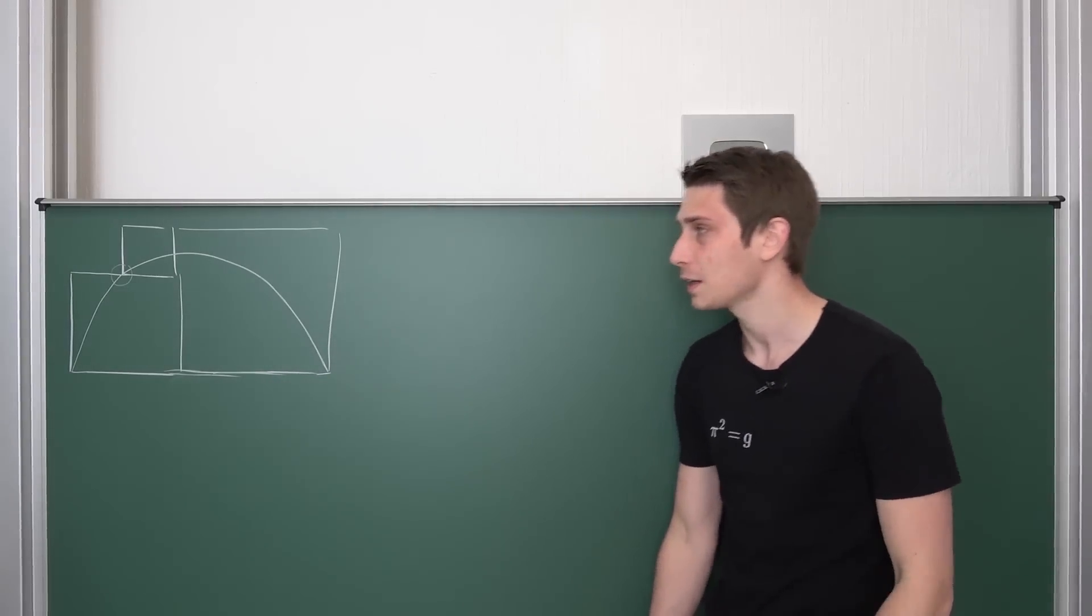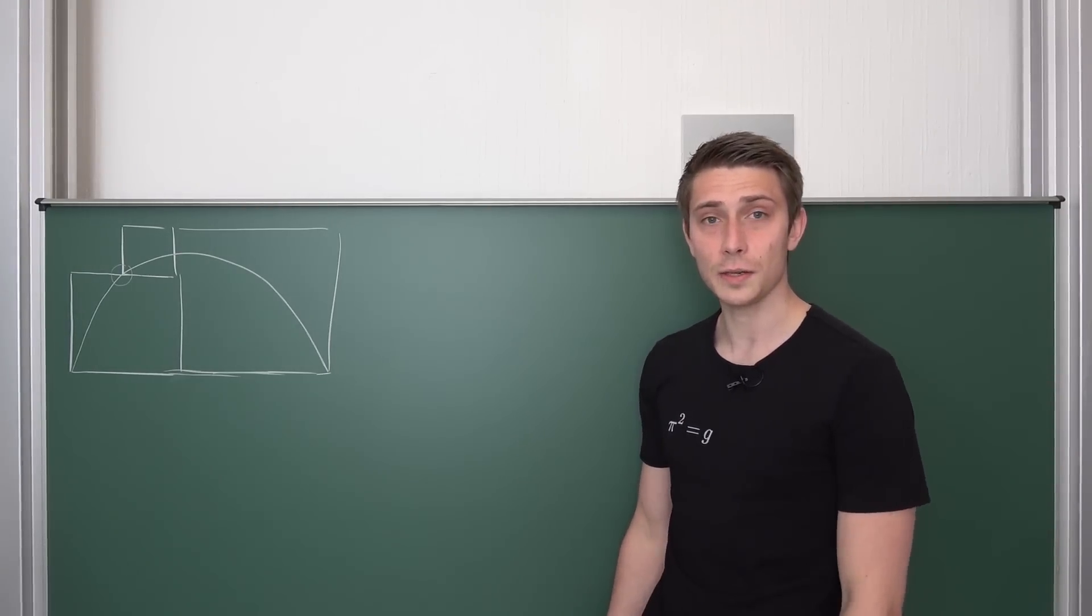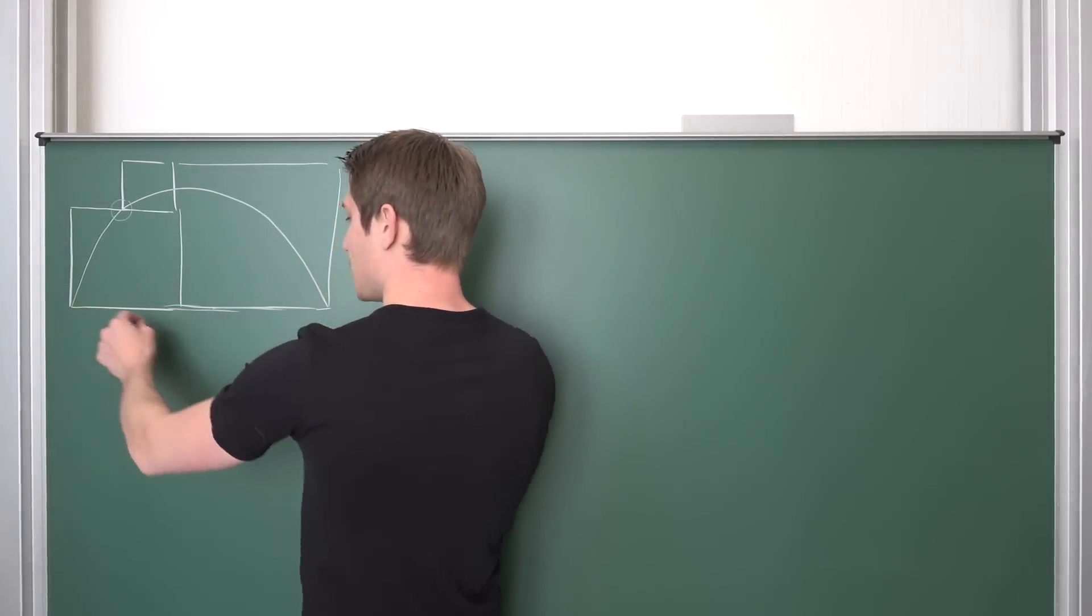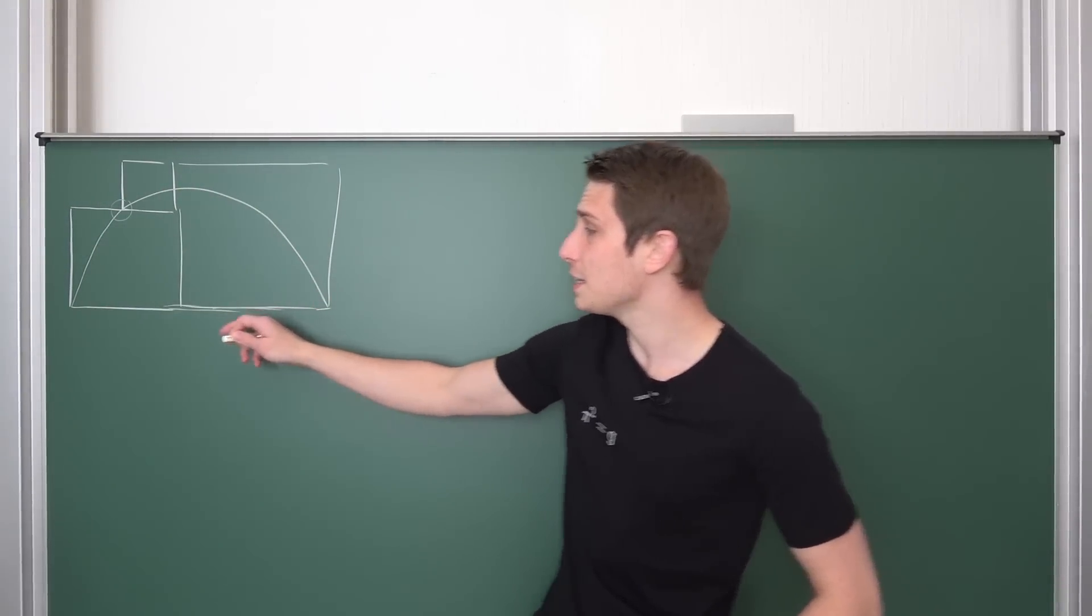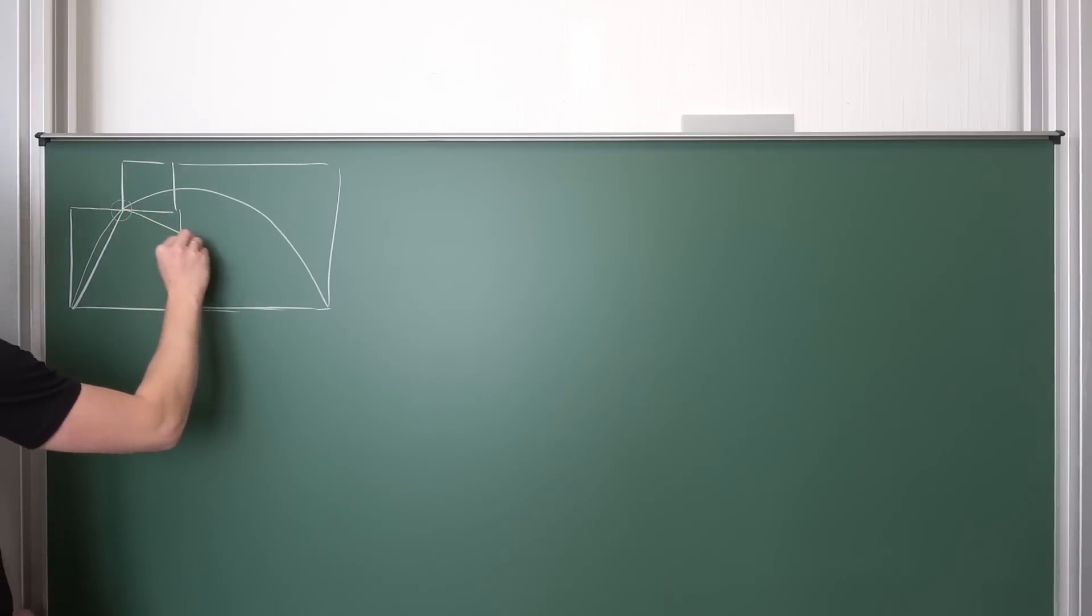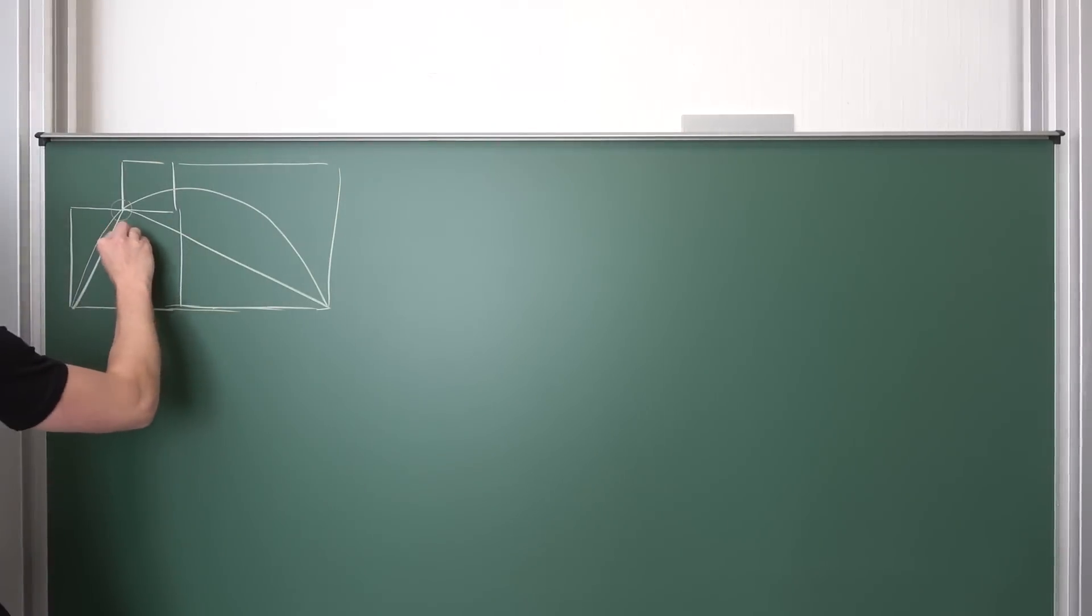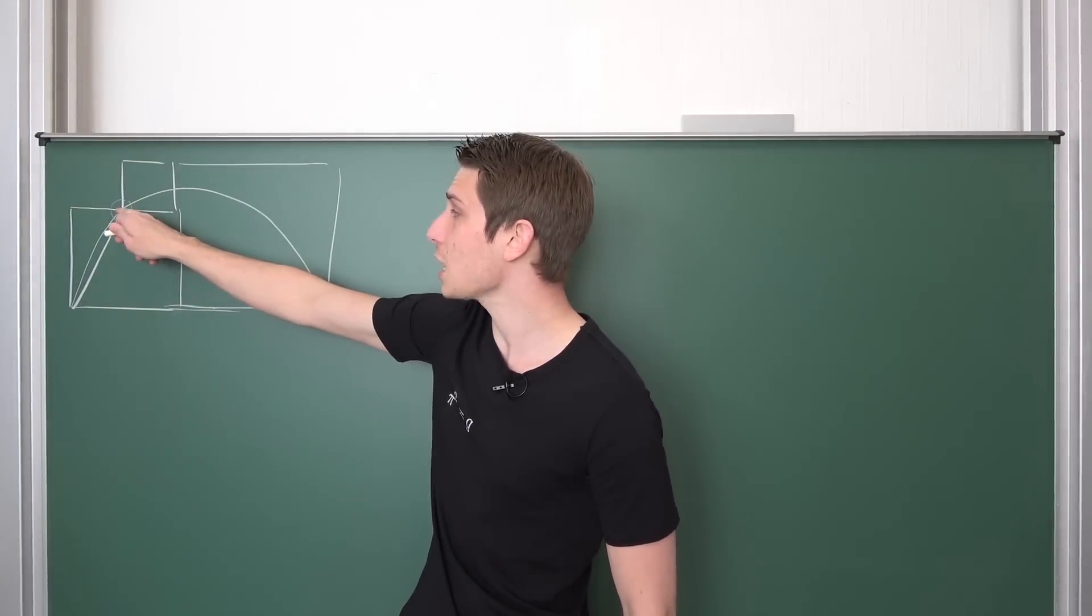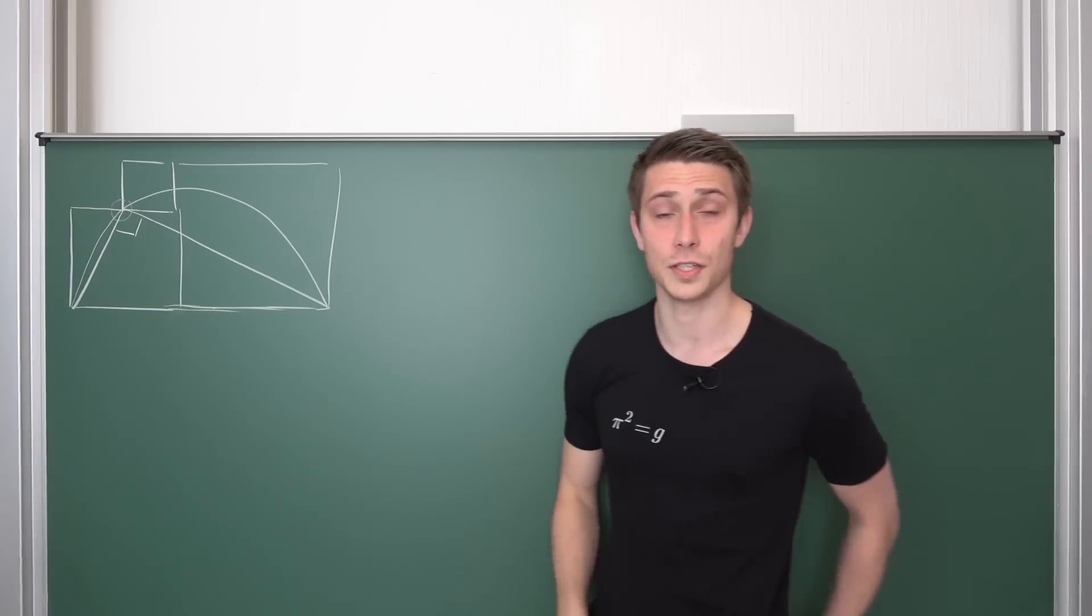We only need two theorems today. On the one hand, Thales theorem stating that if we have a diameter passing right through the origin of a semicircle, then whenever we draw some kind of triangle into here that connects to the outer arc, it's going to be a right triangle. This triangle inscribed with the edge lying exactly at this important intersection point will be a right triangle.